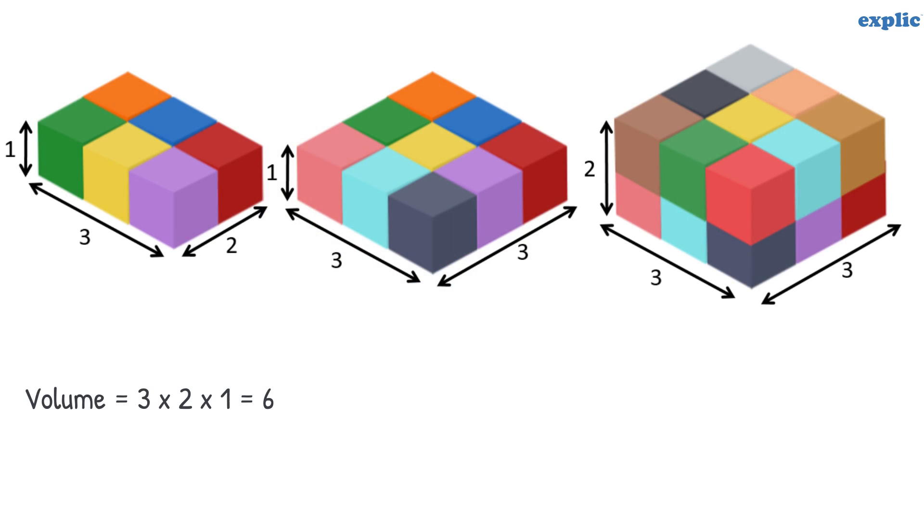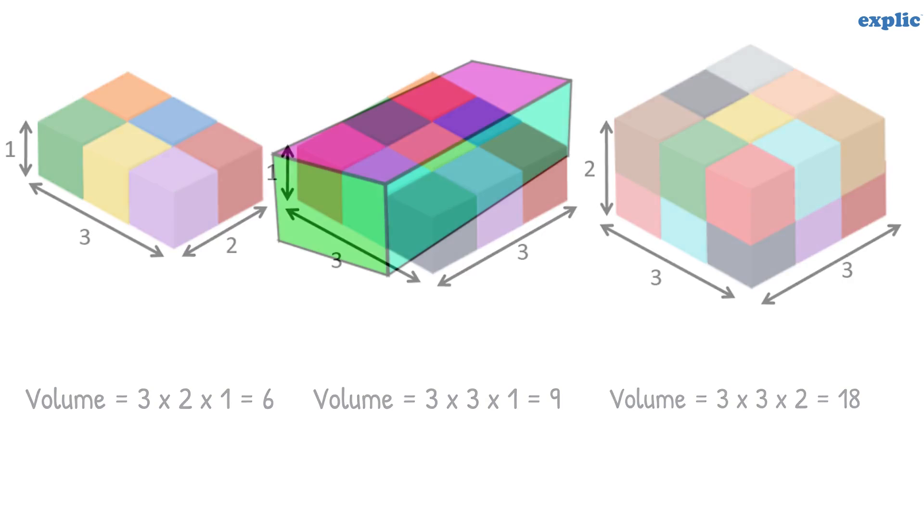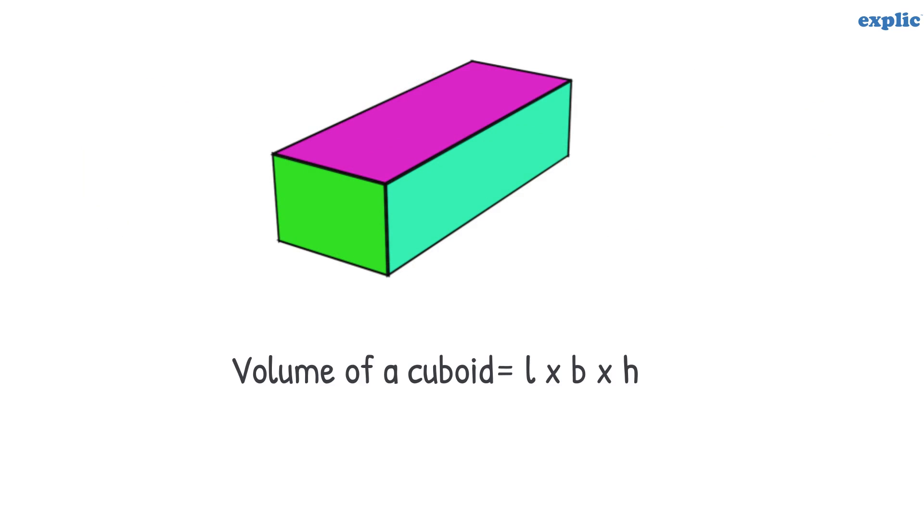If we look closely, we can observe that the volume of the cuboid is the product of its length, breadth and height. Therefore, the volume of a cuboid of length l, breadth b and height h is lbh.